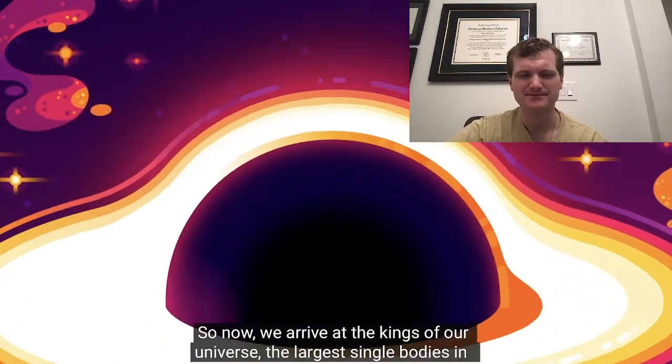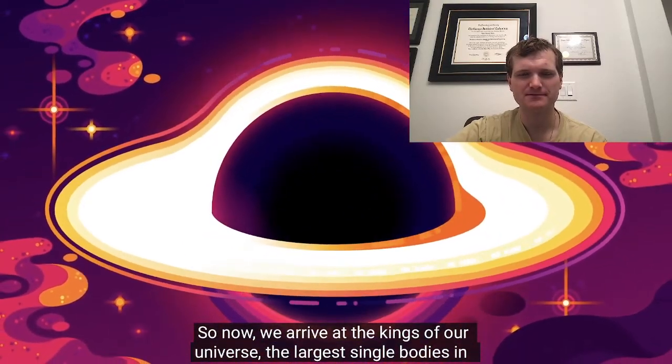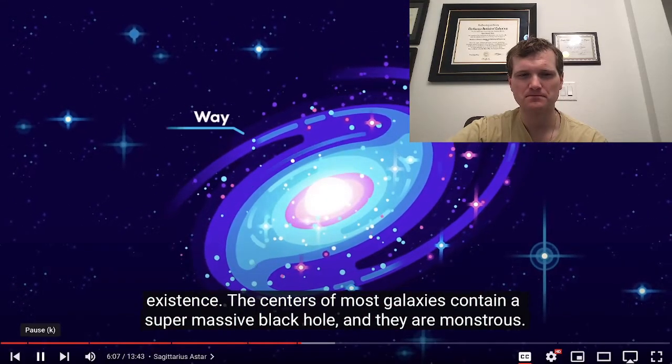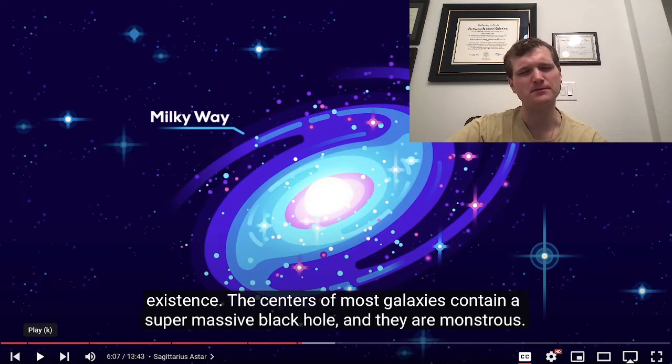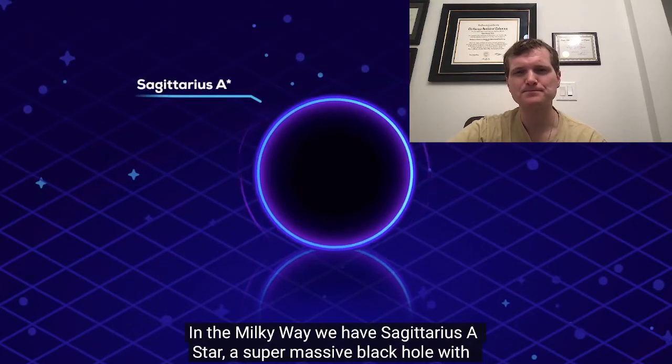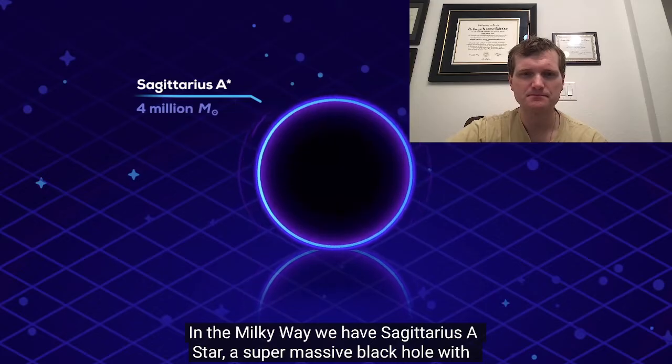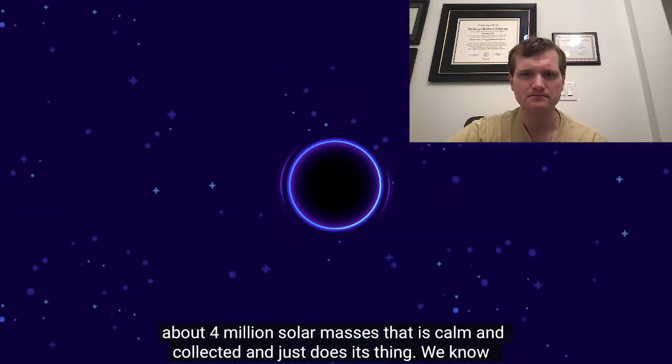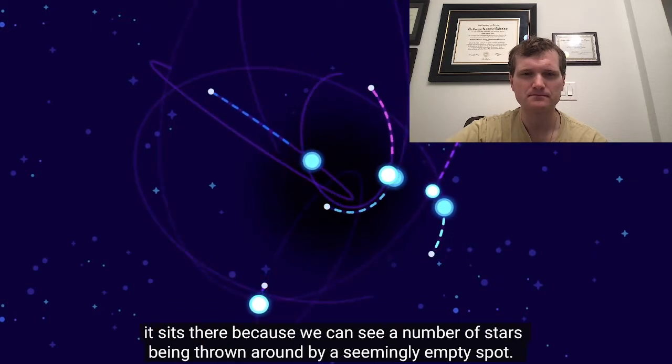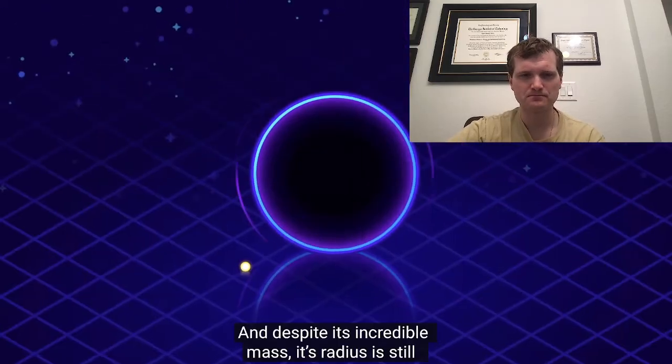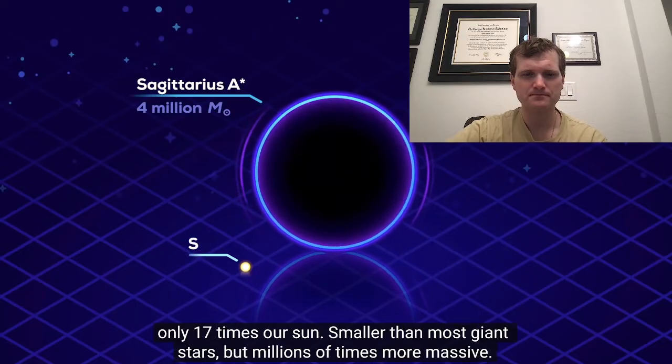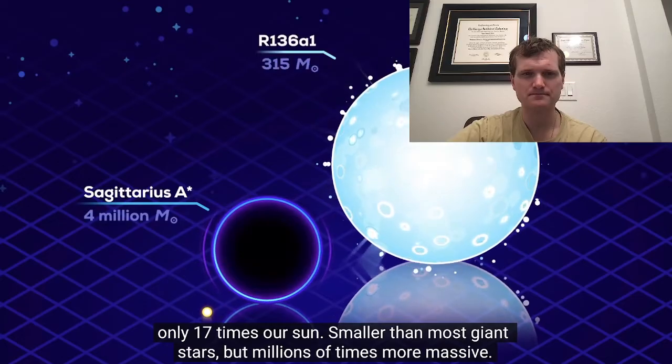So now we arrive at the kings of our universe, the largest single bodies in existence. The centers of most galaxies contain a supermassive black hole. Did it say how you get from several thousand to millions though? Monstrous. In the Milky Way, we have Sagittarius A-star, a supermassive black hole with about 4 million solar masses that is calm and collected and just does its thing. We know it sits there because we can see a number of stars being thrown around by a seemingly empty spot. And despite its incredible mass, its radius is still only 17 times our sun, smaller than most giant stars but millions of times more massive.